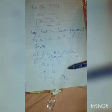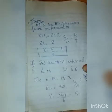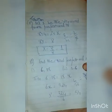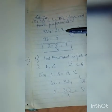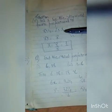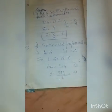For the second part, find the 4th proportional for 8, 4, 2. So 8 is to 4 equals 2 is to X. We write 8 divided by 4 equals 2 divided by X, cross multiply, and X equals 1.